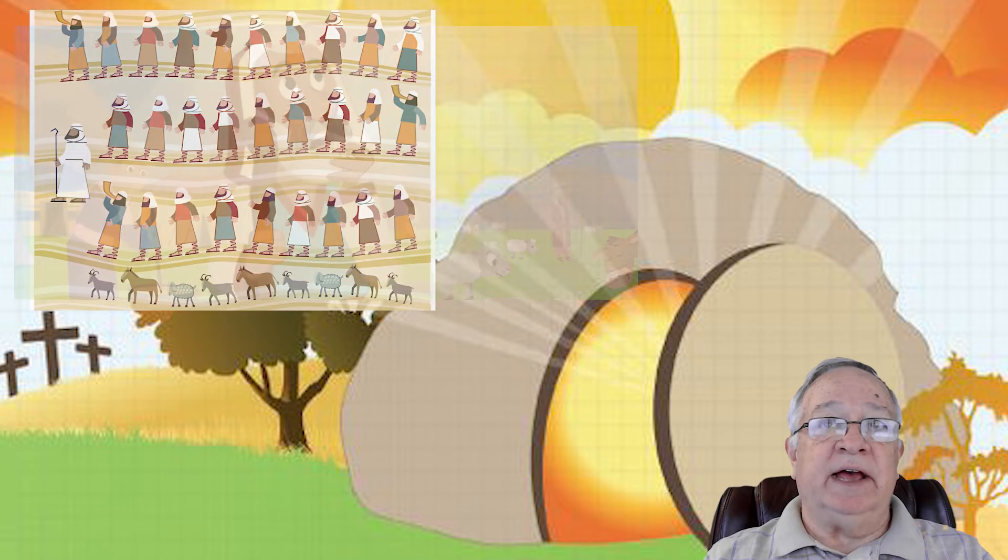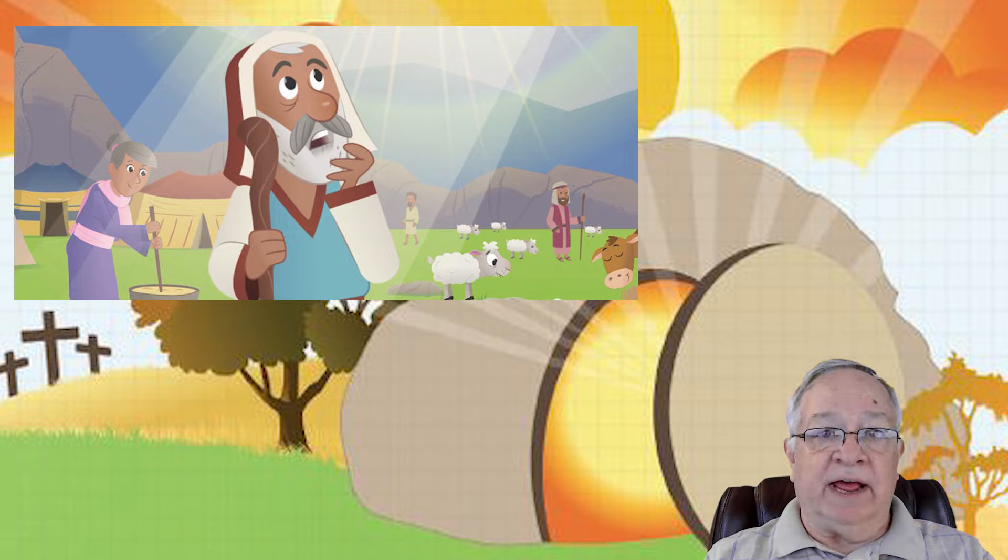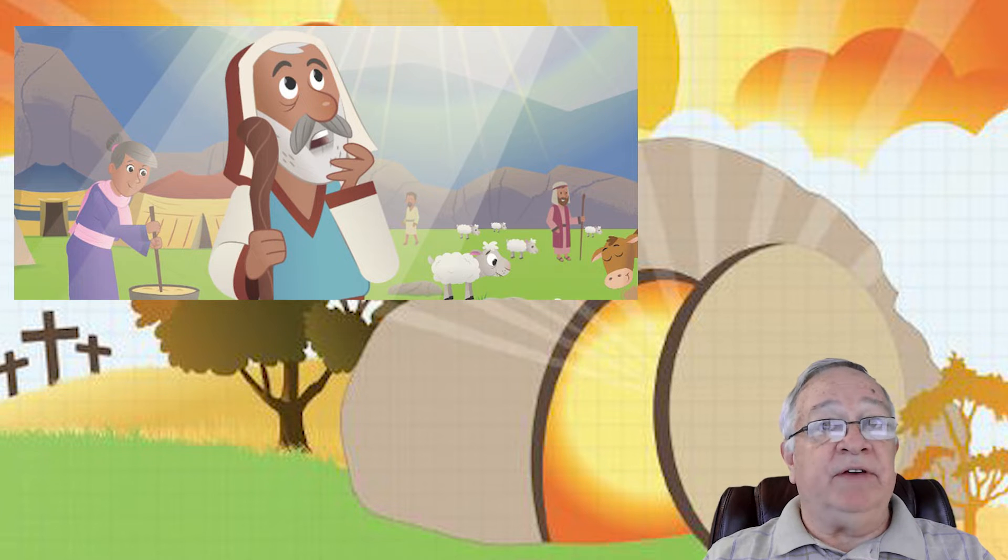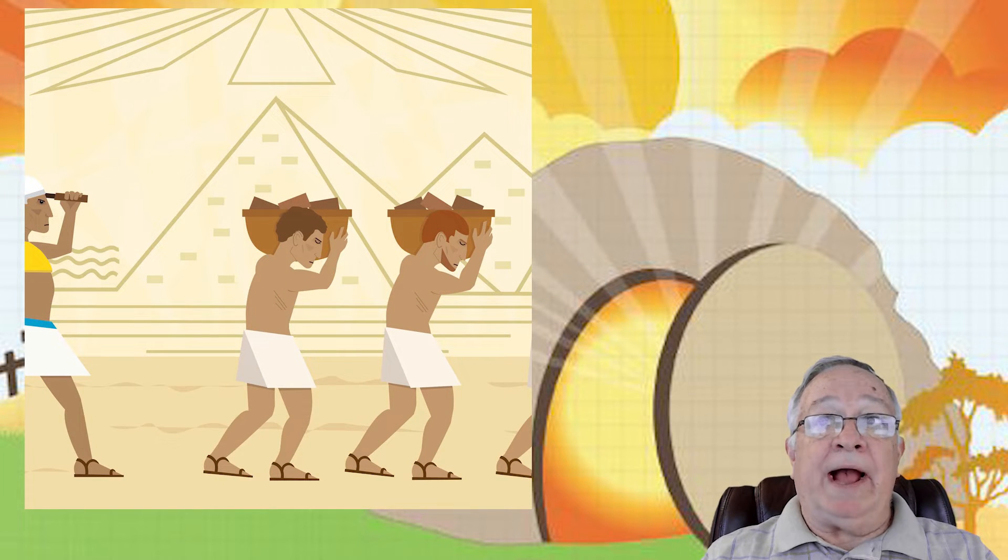Now the king of Egypt at the time, they called him the Pharaoh, did not want them to go back because he was using them against their will to build his great projects.